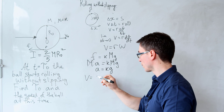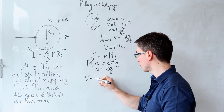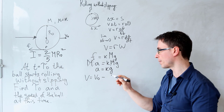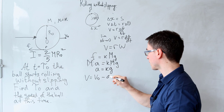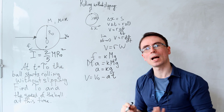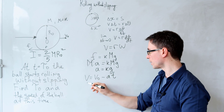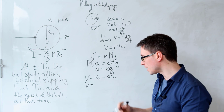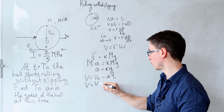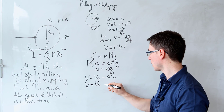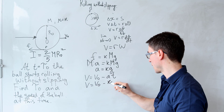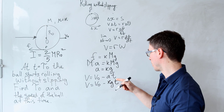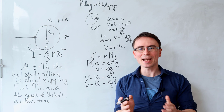Using kinematics, the speed at time t is v(t) = v₀ − kg·t.